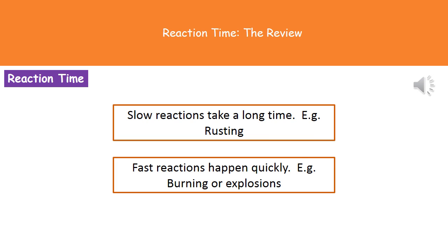One of the things that they could ask you on your exam paper is what's an example of a slow reaction and what's an example of a fast reaction. Now our slow reactions are something that takes a long time to occur, and the best example of that one is rusting. If you are looking for a fast reaction, that's one that's going to happen very quickly, and the examples there would be things like burning or explosions.